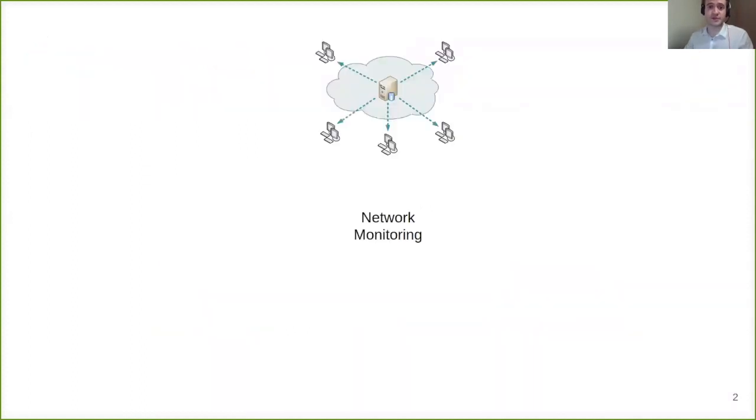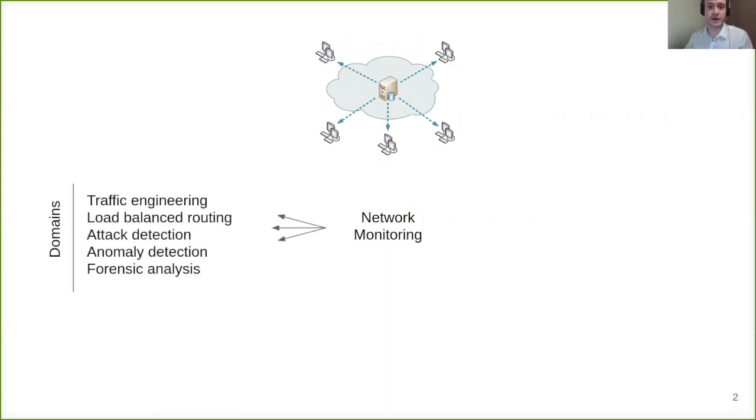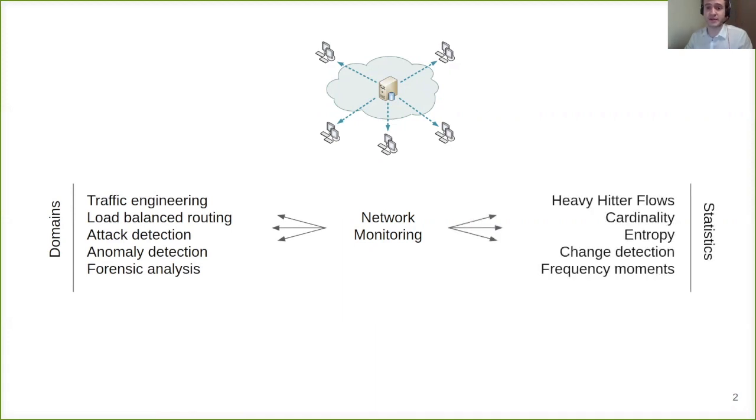Network monitoring is at the heart of many domains such as traffic engineering, load balanced routing, attacks and anomaly detection. Over several decades it collected variety of metrics including heavy hitter flows also known as iceberg or elephant flows, number of unique flows as cardinality, entropy, change detection and many others. Due to massive volumes of traffic and low memory it uses sampling and sketching techniques in almost every monitoring algorithm. In current talk we dig deeper into sketching techniques.